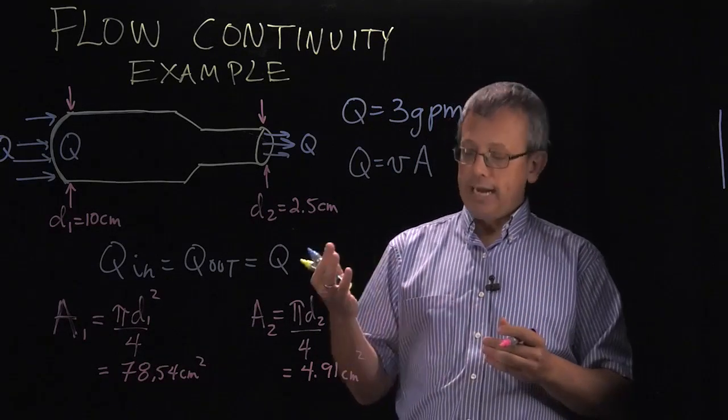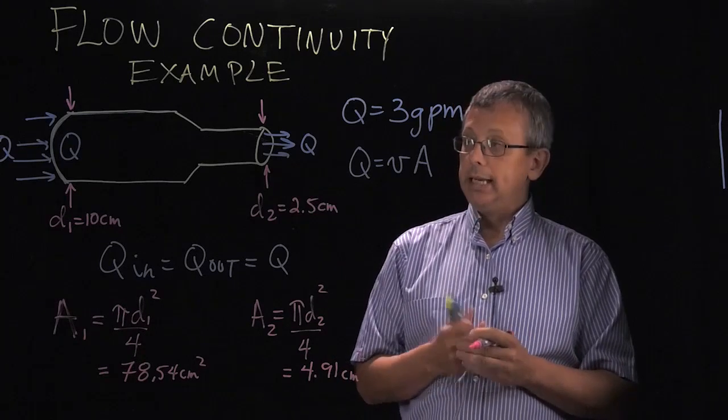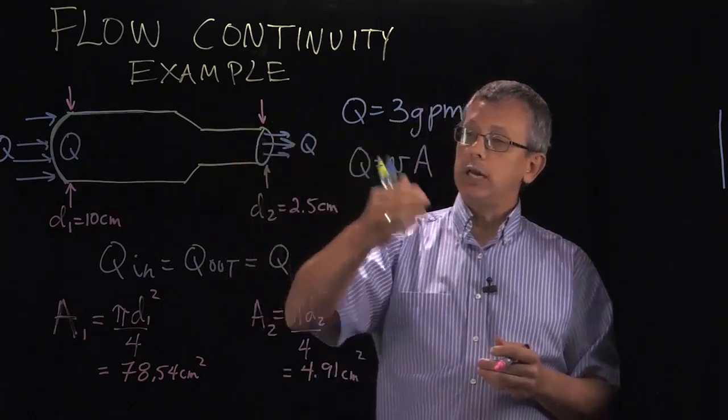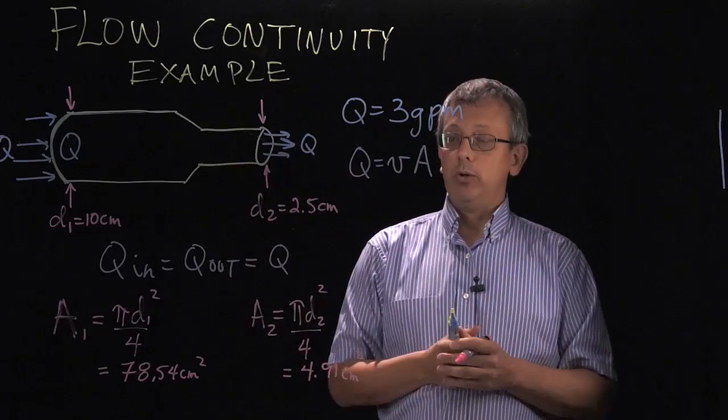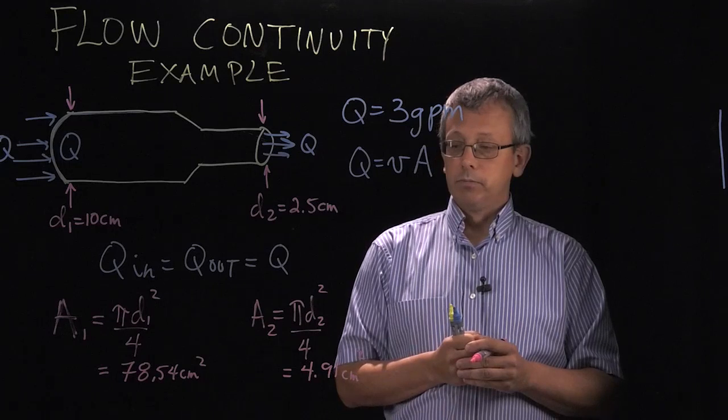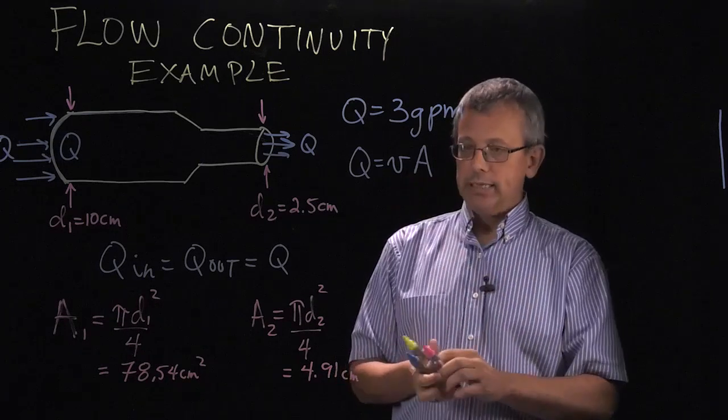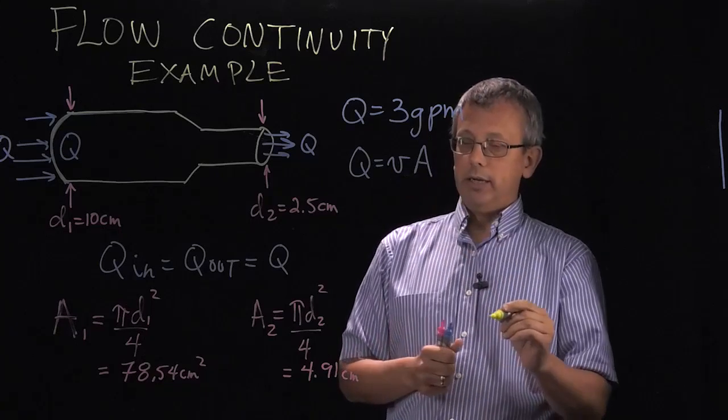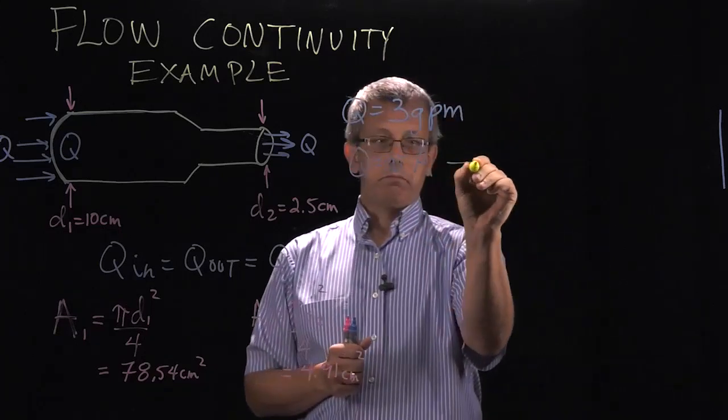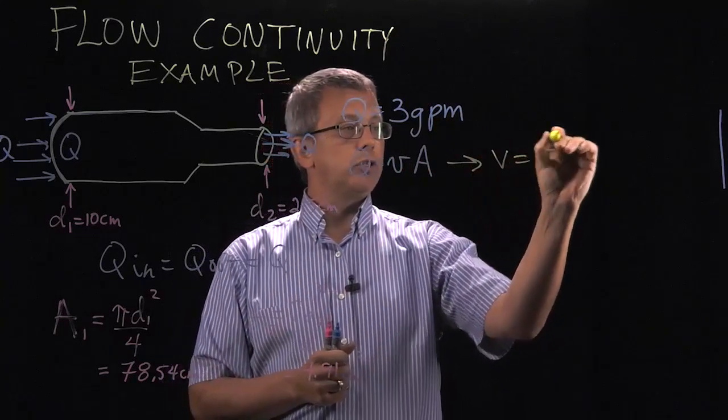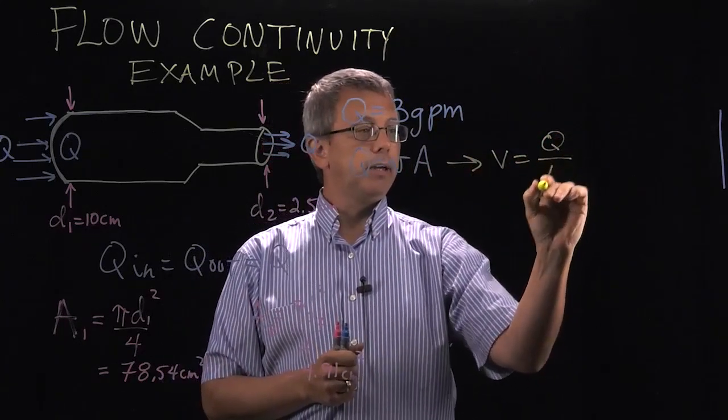The question asks, how fast is the water speed inside the hose, here where it's flowing in, and outside the nozzle as it exits? What's the difference in speed between the two? In this case, we can manipulate this equation where our flow is the velocity times the area and solve for speed. In other words, the velocity equals the flow divided by the area.